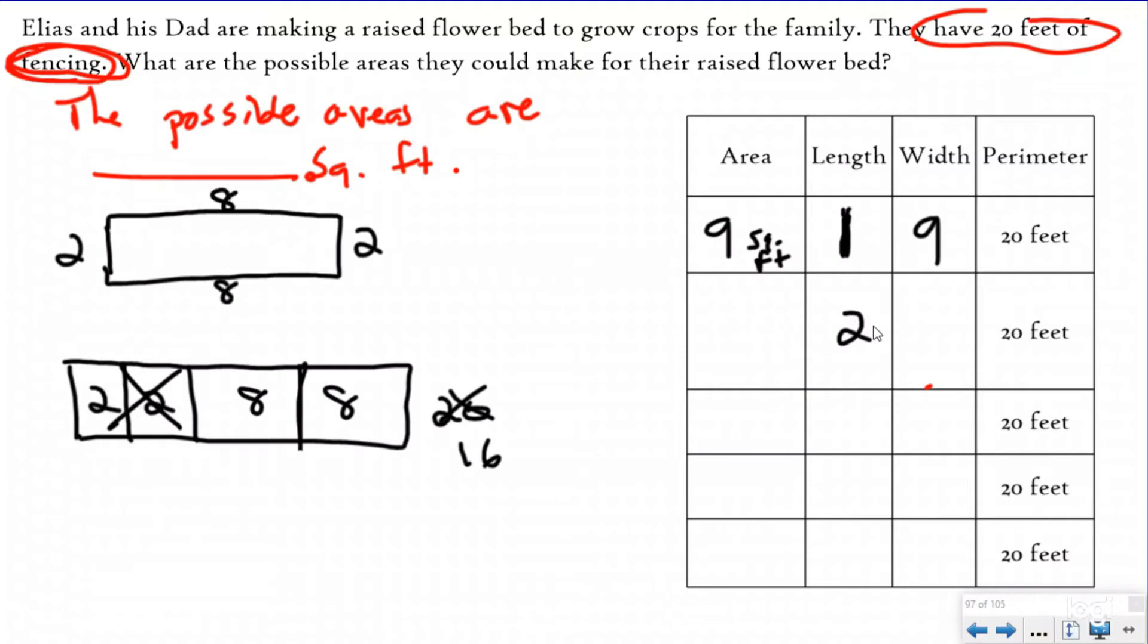Which means if my length is two, my width has to be eight, which now when I find the area, length times width, eight times two is going to give me 16 square feet.